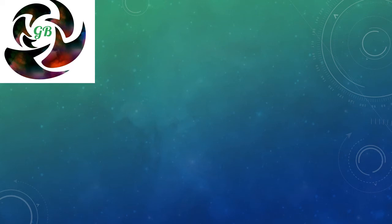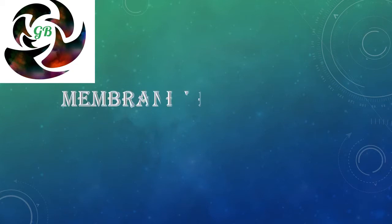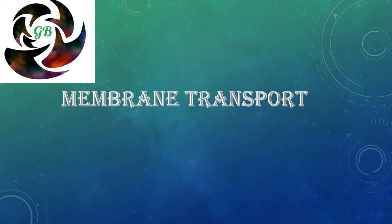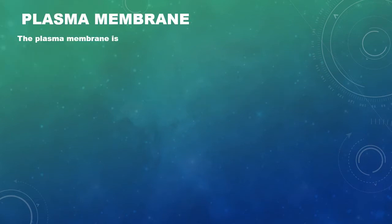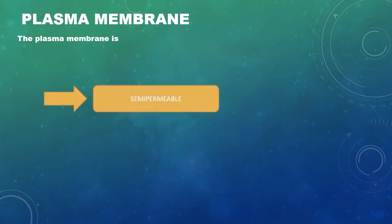Welcome to the Grow Bio channel. In today's video we're going to study about membrane transport, which is the most important function of the plasma membrane. The plasma membrane is a semi-permeable membrane — it allows certain molecules such as uncharged particles and lipophilic molecules to pass through the bilayer very easily, whereas other molecules will pass through only via channels, ports, and pumps.